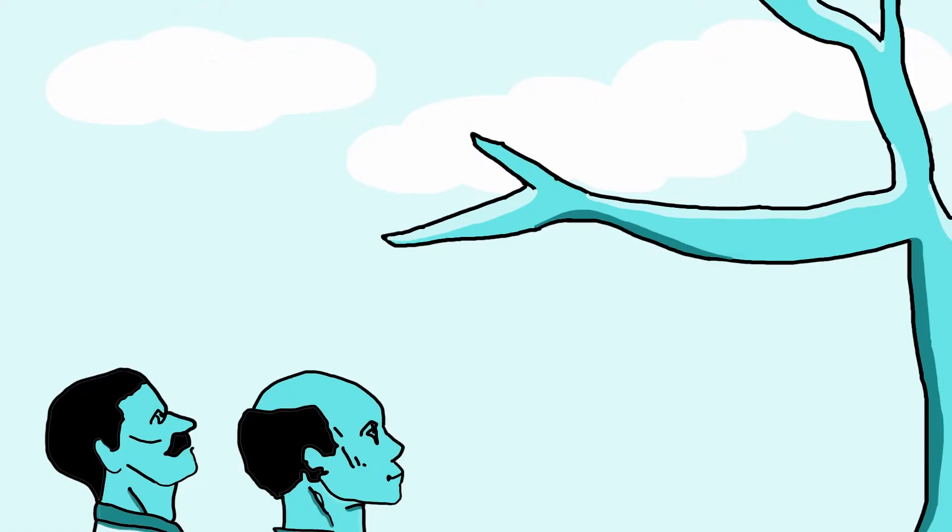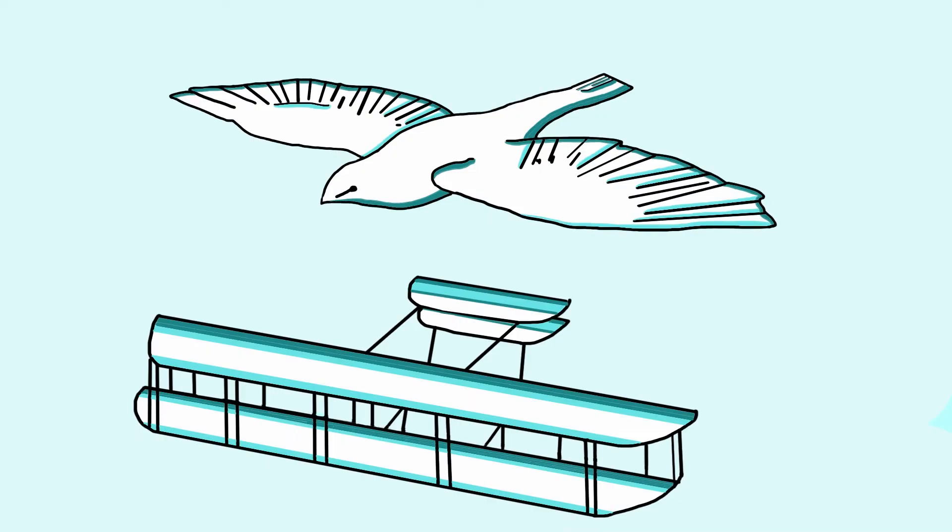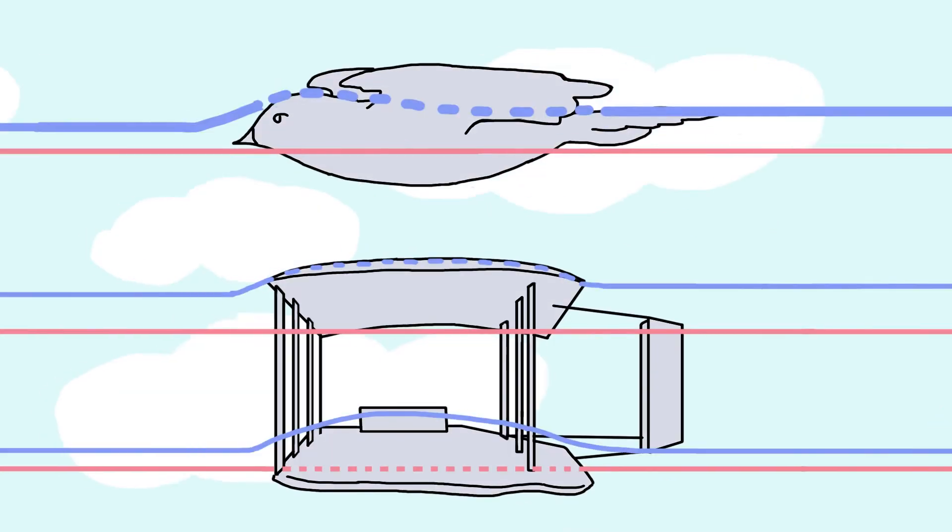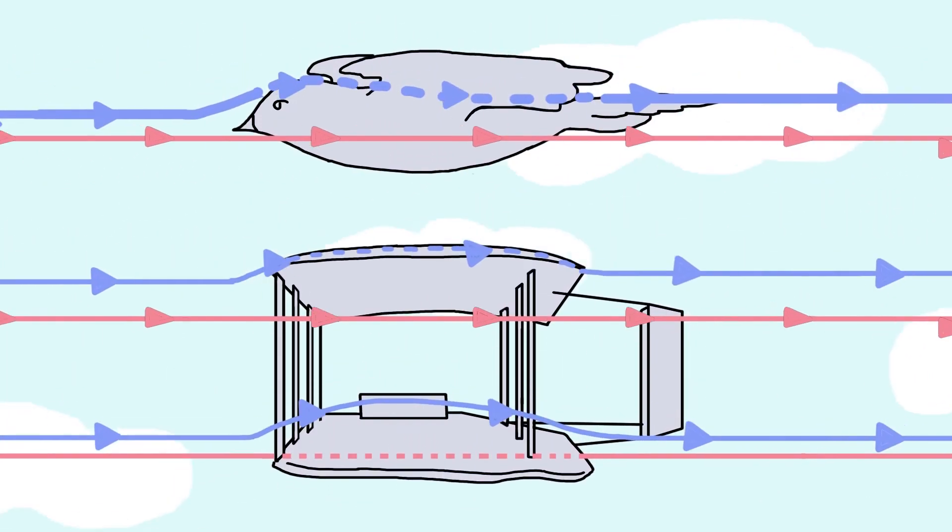Almost a thousand years later, the Wright brothers still studied birds for inspiration, but they didn't copy birds pixel by pixel. Instead, they used principle-based engineering to apply their observations in a way that humans could actually use.